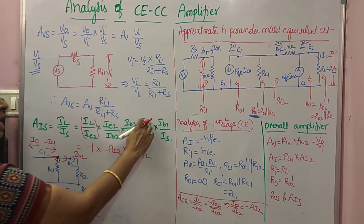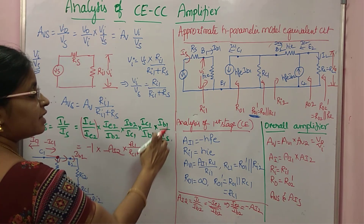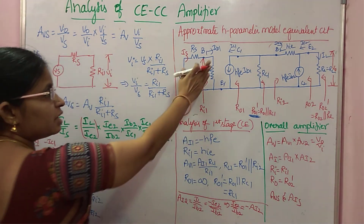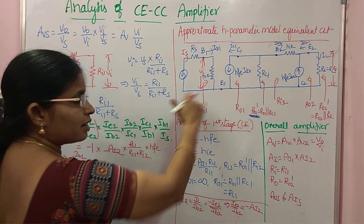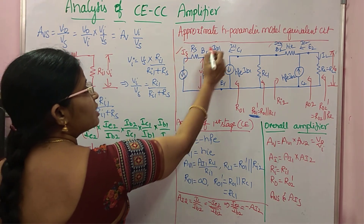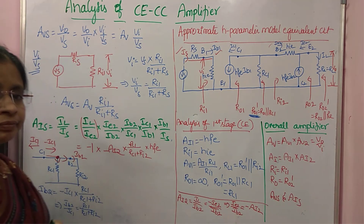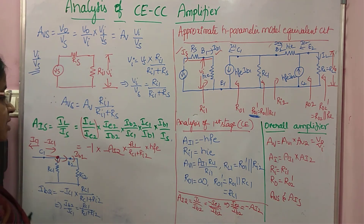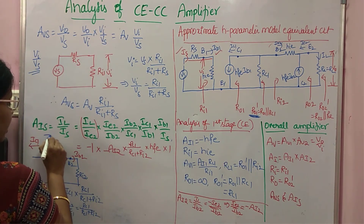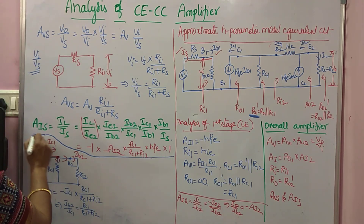The final factor IB1 / IS: looking at the input circuit, there is no other resistance to divide the current IS, so IB1 = IS, meaning IB1 / IS = 1. Therefore, the overall AIS = (−1) × (−AI2) × (−RC1 / (RC1 + RI2)) × H_FE × 1. This completes the analysis of the CECC amplifier.